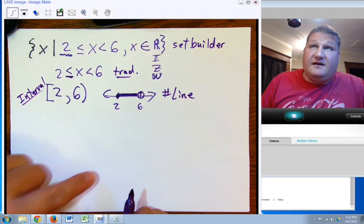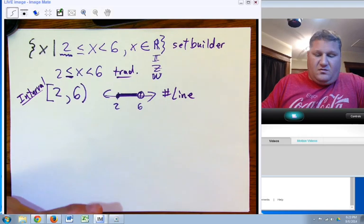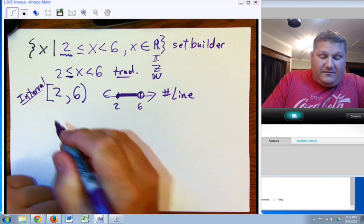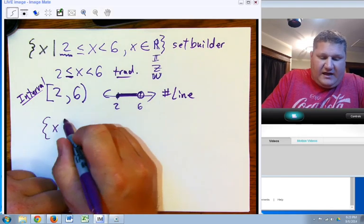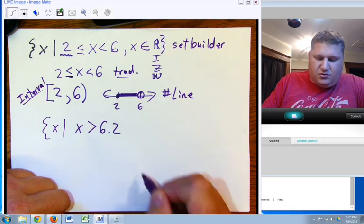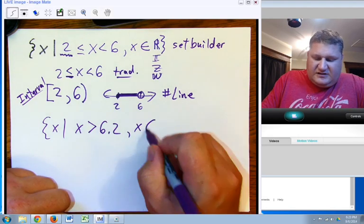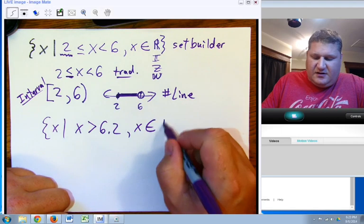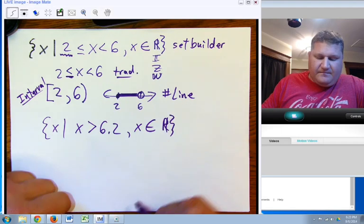So, given that, we have a couple other pieces that we need to talk about. Now, if I have the set of all x such that x is greater than 6.2, and of course, since it's a decimal, let's keep it in the set of all real numbers.